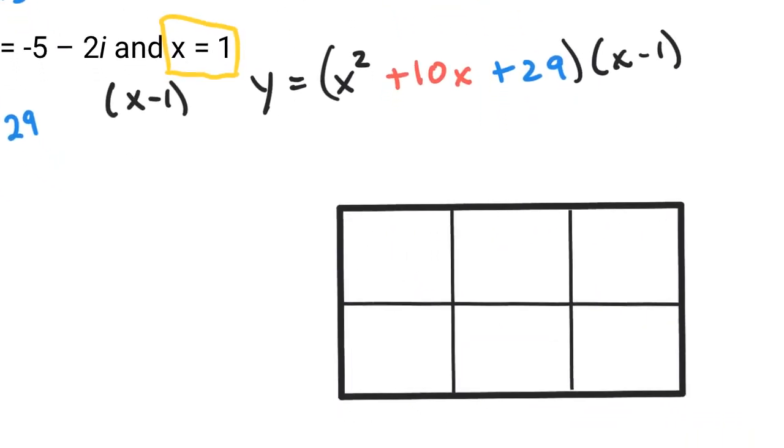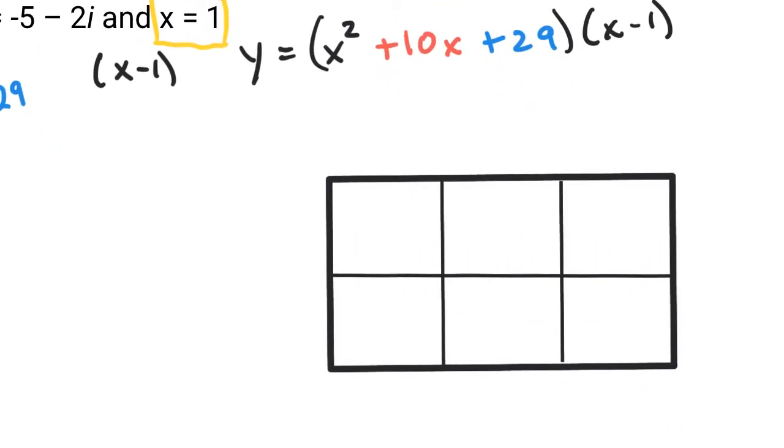If we zoom in on this problem, we're going to multiply with a 3 by 2 generic rectangle. We'll multiply x squared plus 10x plus 29 times the quantity x minus 1. When you multiply those across the bottom row, you'll get x cubed and then positive 10x squared and 29x across the bottom. And then on top, when you multiply, you'll get negative x squared, negative 10x, and negative 29 from that product.